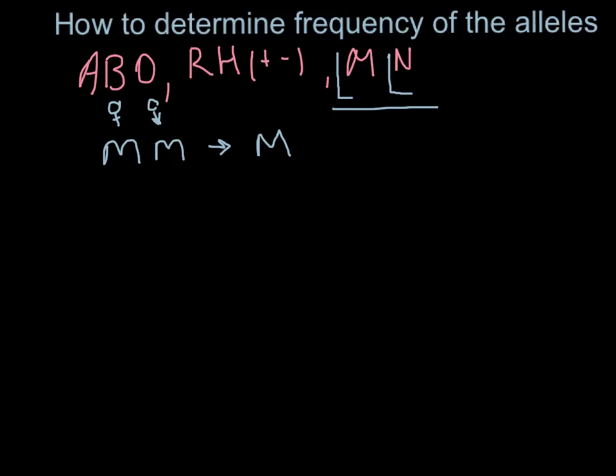Another type can be MN and it's called MN type, and another combination of the alleles can be NN and this gives us N type.